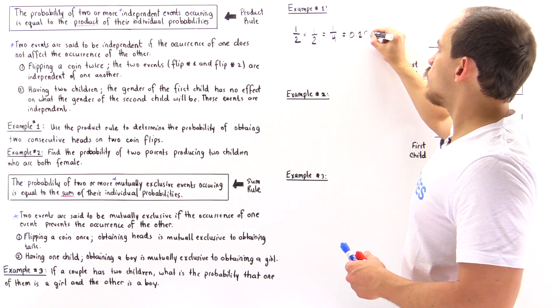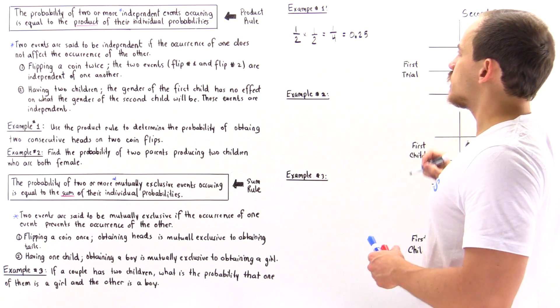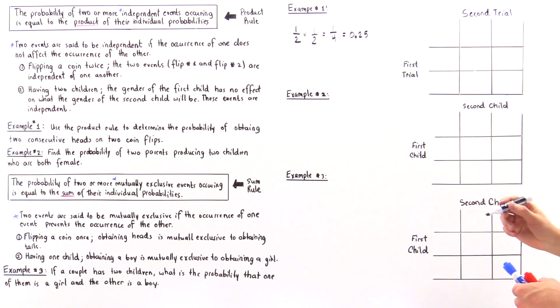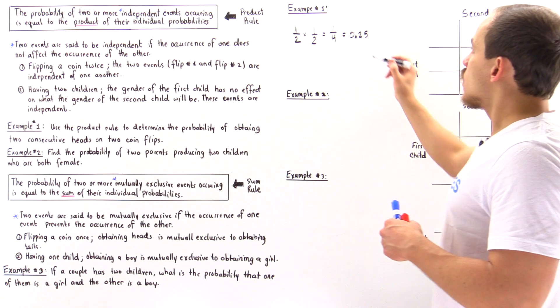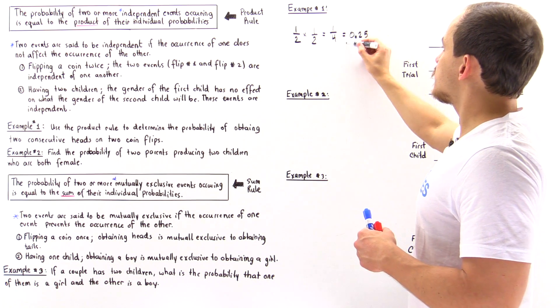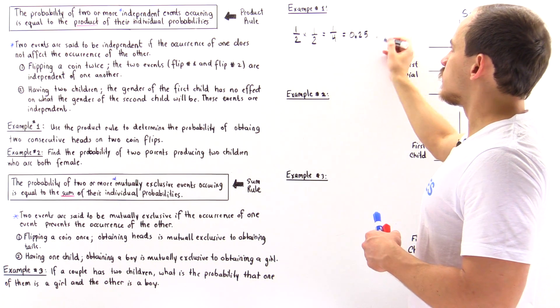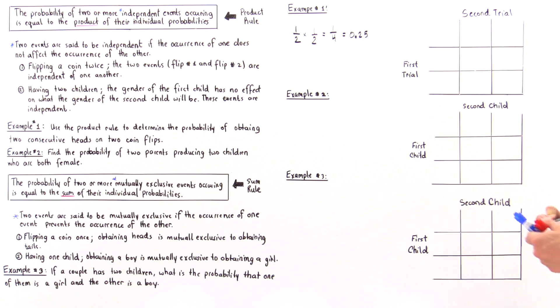Multiplying by 100, we get 25%. So remember, this is 0.25 out of one, or equivalently 25%.